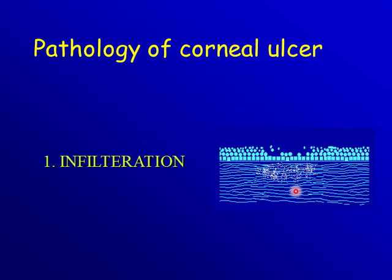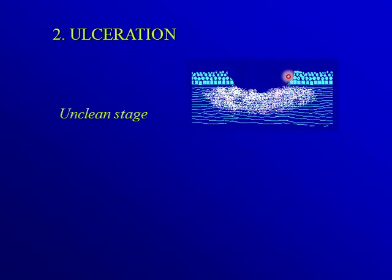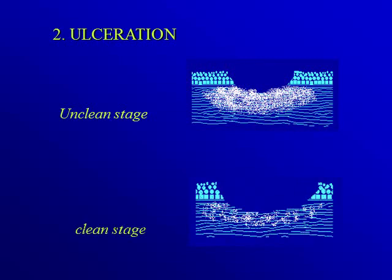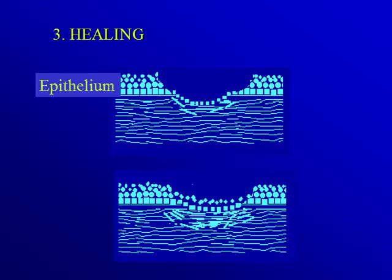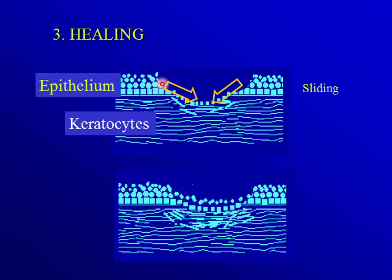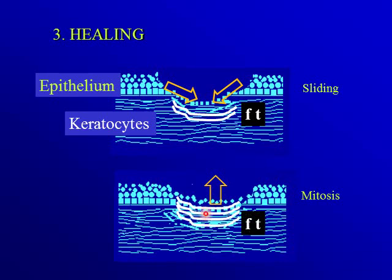A corneal ulcer starts by infiltration, then loss of tissue. It can be in an unclean stage with organisms in the area with heavy infiltration and edema. If the patient is going to heal, the infiltration decreases and the organisms are cleared. Healing occurs as epithelial cells slide to cover the area, keratocytes lay fibrous tissue, and basal cells undergo mitosis into six layers. Gradually the defect is covered and the surface returns to its natural position.